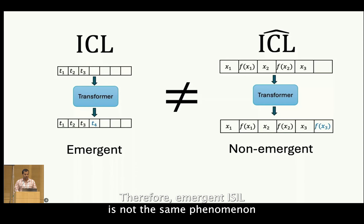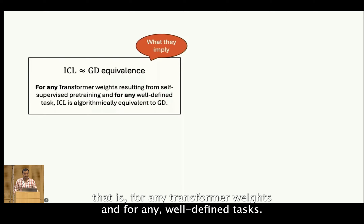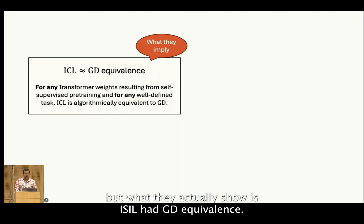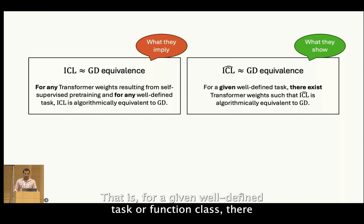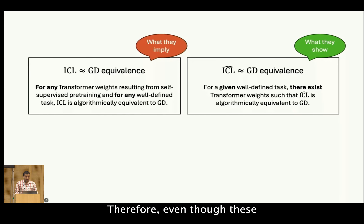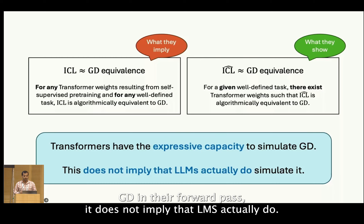What these works imply is the ICL-GD equivalence — that is, for any transformer weights and for any well-defined tasks, ICL and GD are algorithmically equivalent. But what they actually show is ICL-hat GD equivalence — that is, for a given well-defined task or function class, there exists transformer weights that work identically to GD. Therefore, even though these recent works show that transformers can express GD in their forward pass, it does not imply that LLMs actually do.